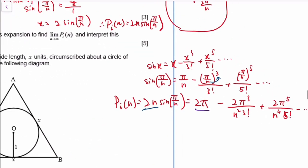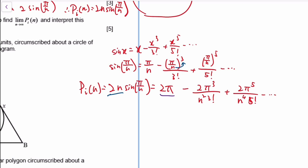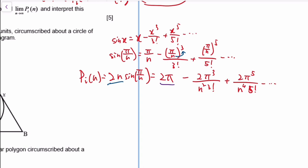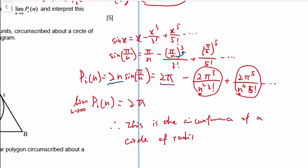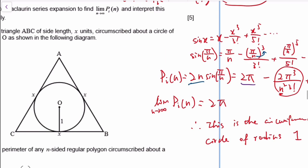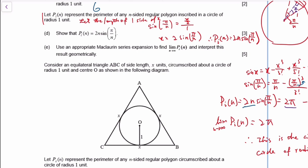Archimedes didn't do all this to figure that out. He actually found a really good estimate of pi. Taking the limit as n goes to infinity, it's just 2π because all the other terms have powers of n in the denominator. So this is the circumference of a circle of radius 1.